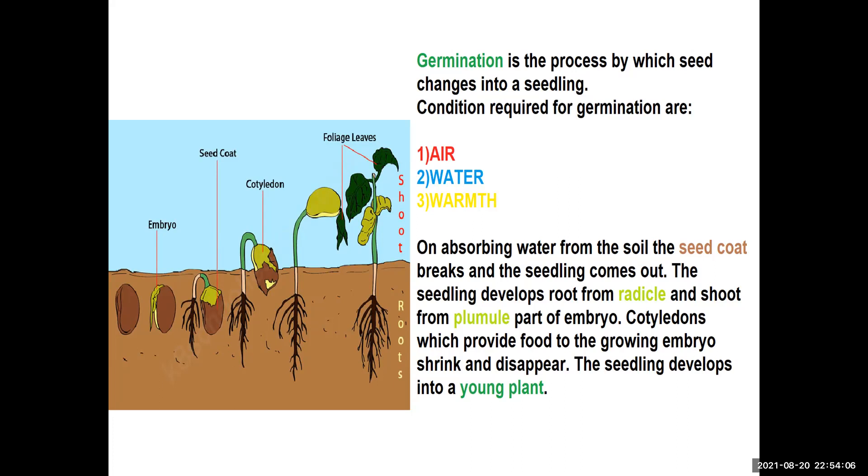Different stages of germination are: seed absorbs water from the soil and gets air and sunlight. The seed coat breaks and the seedling comes out.